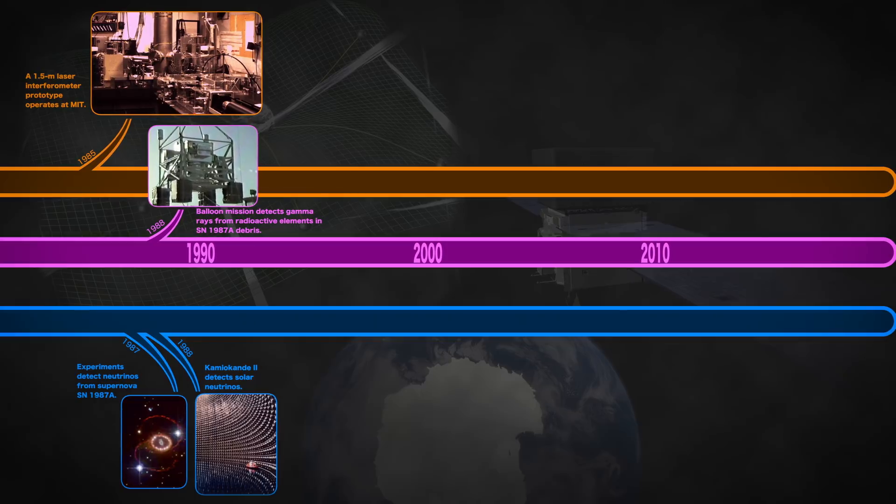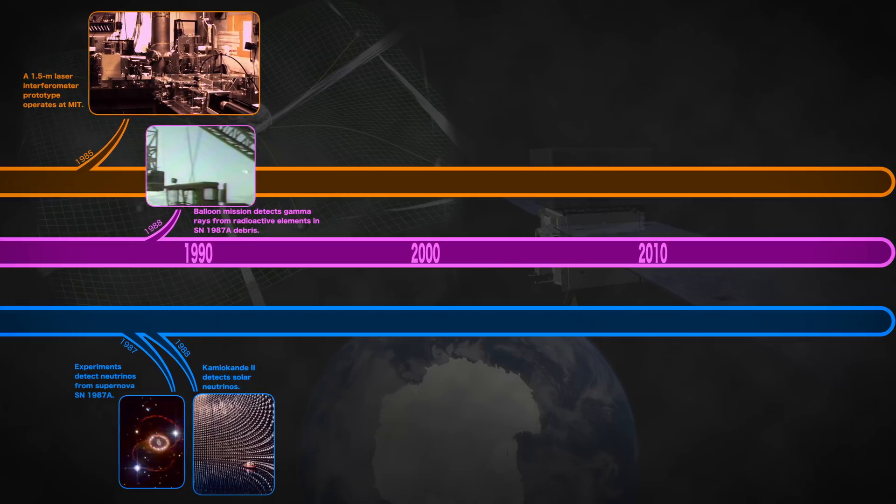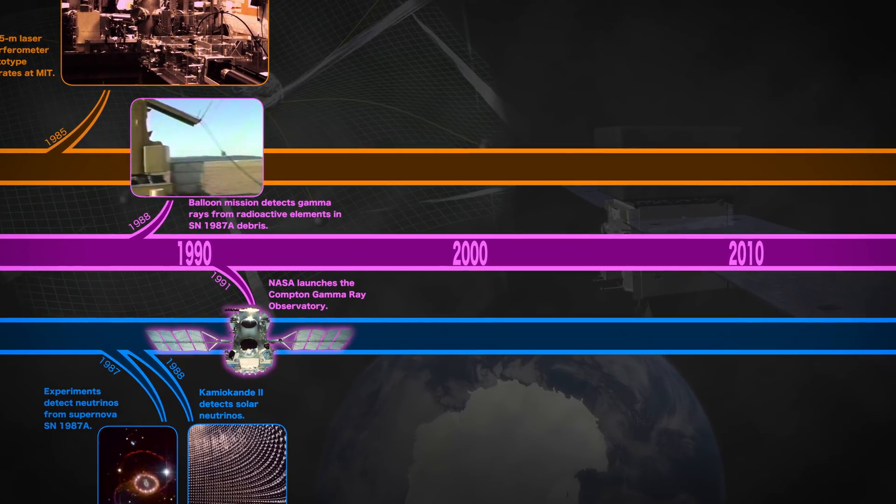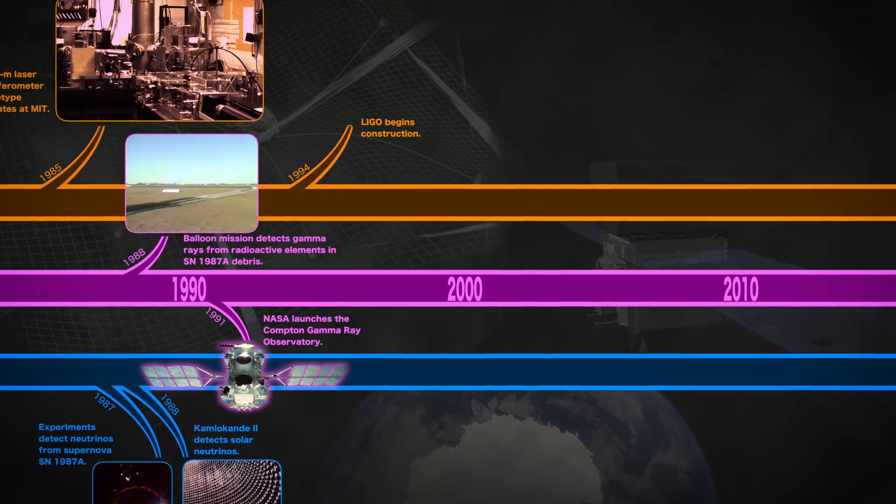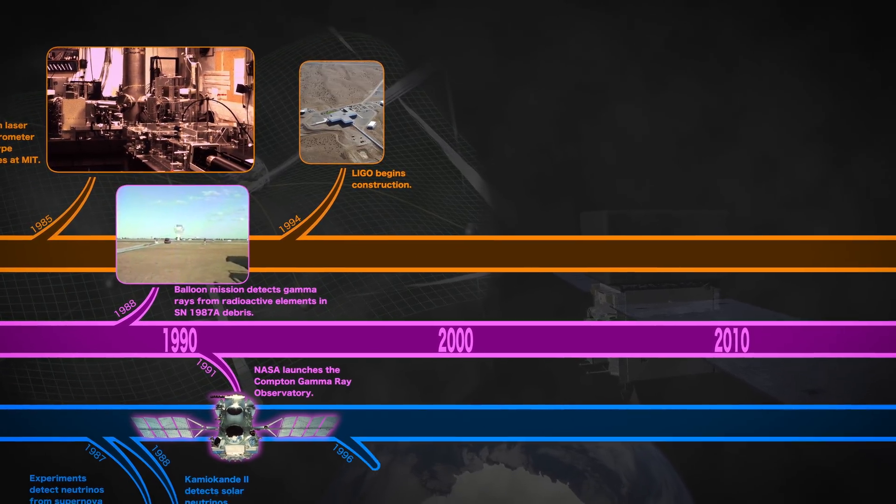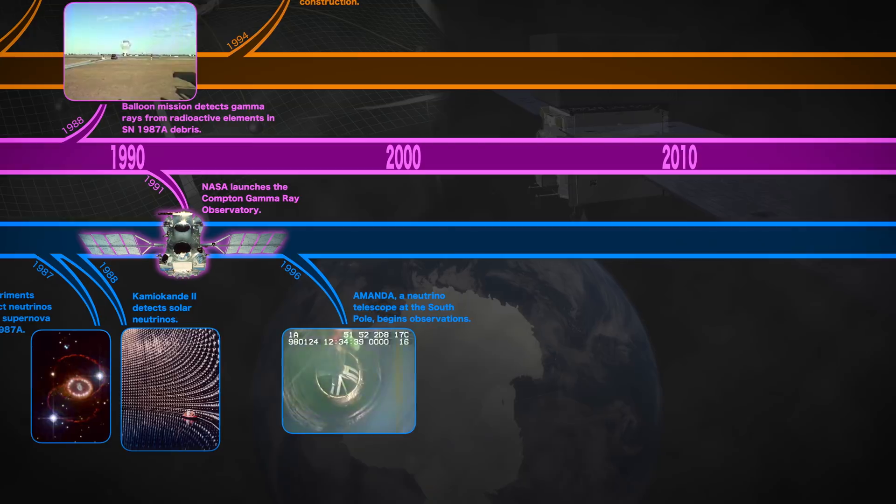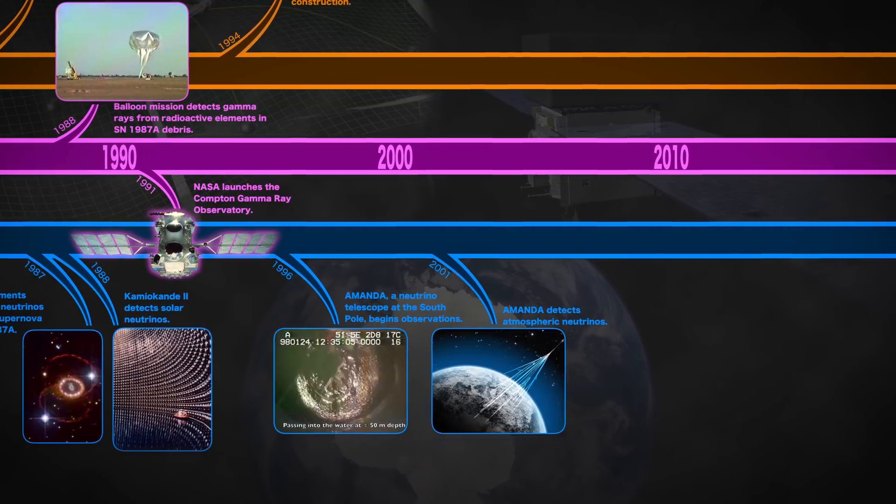The 1990s and 2000s brought new satellites for exploring the gamma ray universe, the construction and first operation of LIGO, and AMANDA, a neutrino detector built under the ice at the South Pole.